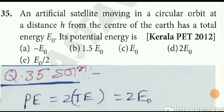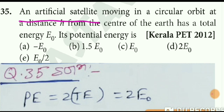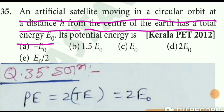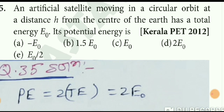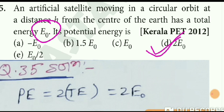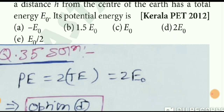Question number 35: an artificial satellite moves in circular orbit with total energy E₀. What is the potential energy? Potential energy of a satellite equals twice the total energy in magnitude. So if total energy is E₀ (negative), kinetic energy would be |E₀| (positive), and potential energy would be 2E₀ (negative). Option D is the correct choice.